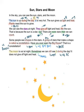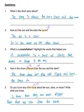Okay, so this is pretty much about the review. And we'll go to the next page. Questions. Number one. What is the short story about? The story is about the sun, stars, and the moon.